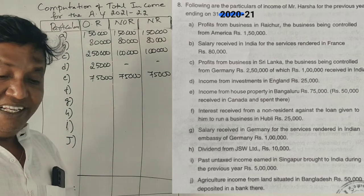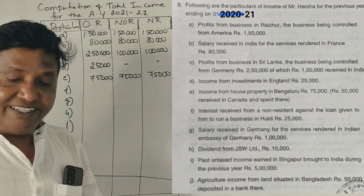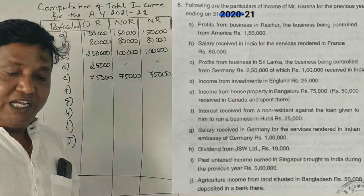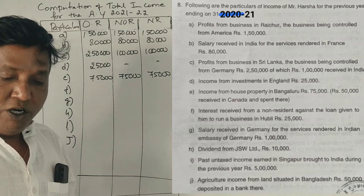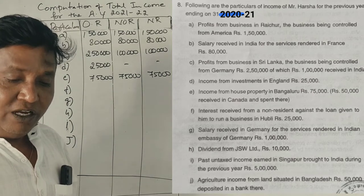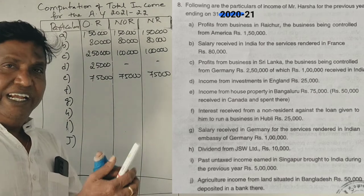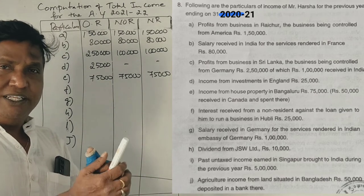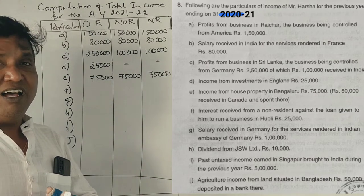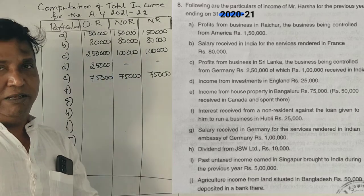Next point: interest received from a non-resident against a loan given to him to run a business — 25,000 rupees. The interest is received from India; the payer is a non-resident of India.